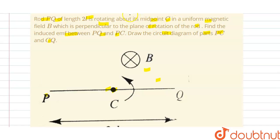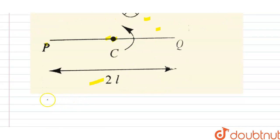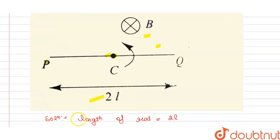So the solution of this question is, we have the length of rod is 2 times l. Induced EMF of PQ and PC we have to find here.